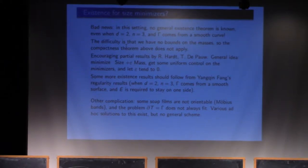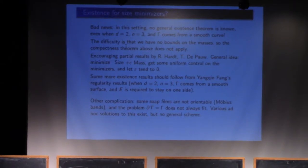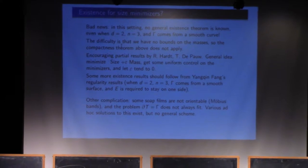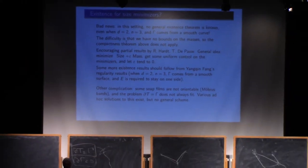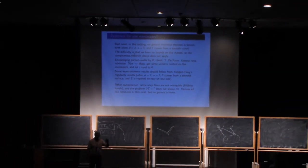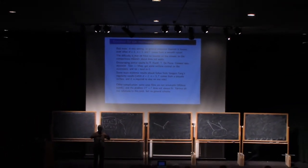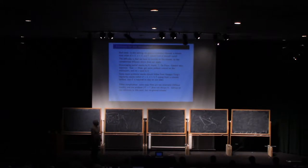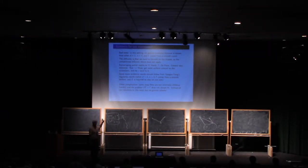There is one little problem with this description: it likes orientation, because currents like orientation, so Möbius strips are harder to get this way. You can sometimes organize a soap film which looks like a Möbius strip, but it's hard to model it exactly in the way I described.